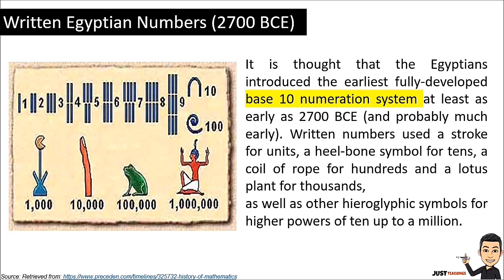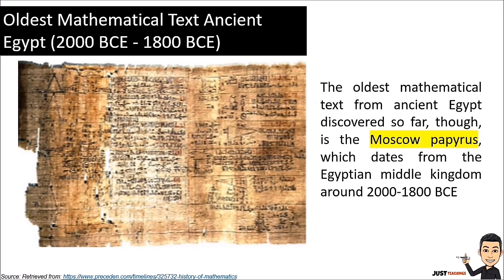We can see that the number system of Egypt was improved over time. We will now proceed to the oldest mathematical text from ancient Egypt. From 2000 BCE to 1800 BCE, the oldest mathematical text from ancient Egypt covered so far is the Moscow Papyrus — an Egyptian mathematical papyrus which dates from the Egyptian Middle Kingdom, around 2000 to 1800 BCE.